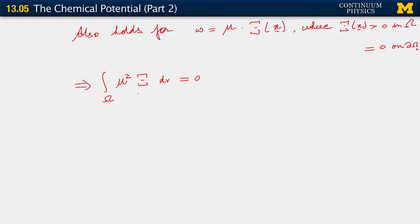Since chi is greater than 0 over the domain, and mu squared, being a square, is always greater than or equal to 0. The only way this condition can be satisfied is if at equilibrium...